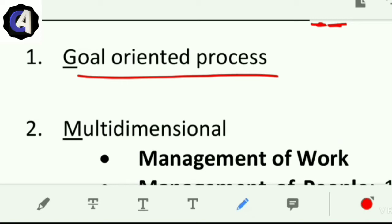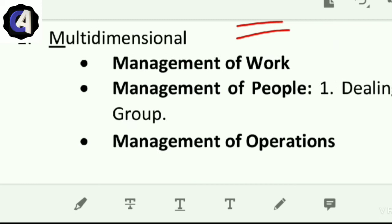First is goal-oriented process. How is management a goal-oriented process? The organization's manager does management to fulfill the organization's goals. There are set objectives for doing business, and we need to achieve them. Therefore it is a goal-oriented process.